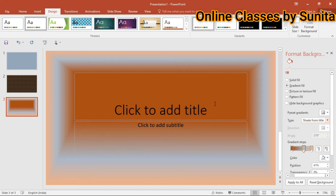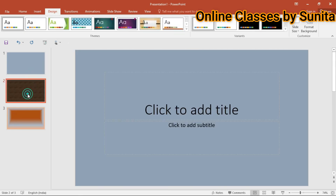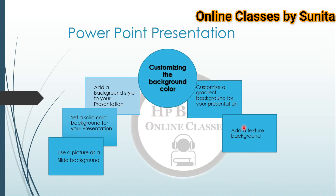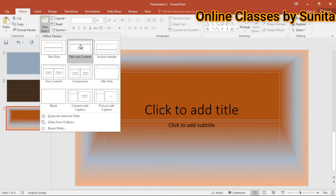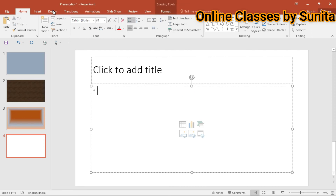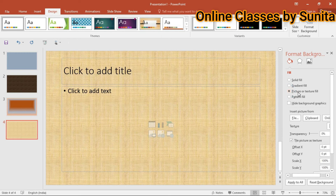आप shade from title — यानि title से shade — किस तरीके से use कर सकते हैं, यह काफी interesting और useful है presentations के लिए। जो भी blank slide है उसमें आप apply करना चाहते हैं, Design पर जाएं, फिर Format Background पर जाएं। Format Background में जाकर आप अपनी settings करें।